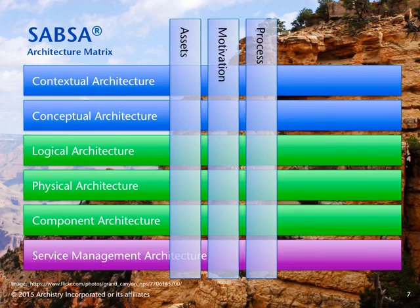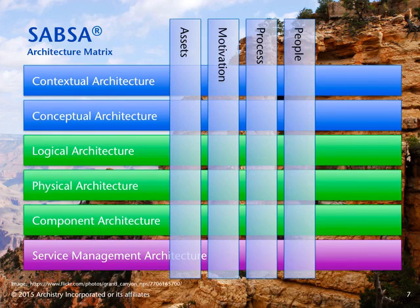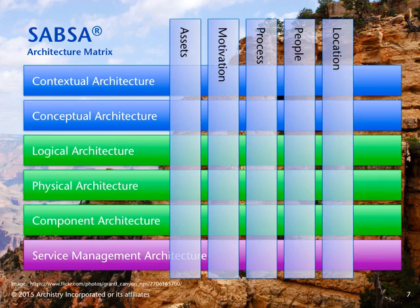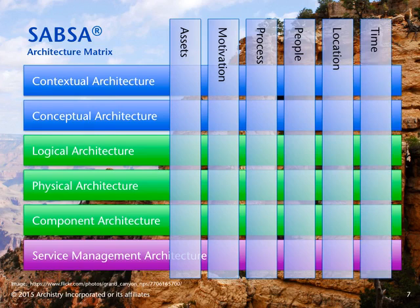The fourth column is the people, or 'who' column. The people perspective is used to identify all of the entities, stakeholders, and individuals making up the organization's extended enterprise, and how those entities are represented and realized at each layer. The fifth column is the location, or 'where' column, which deals with the various geographical, logical, and physical locations of entities and assets within the enterprise, specialized for each layer. The last column is the time, or 'when' column. This perspective is about time and the identification of performance targets, calendars, and deadlines relevant to the organization, its people, or processes.